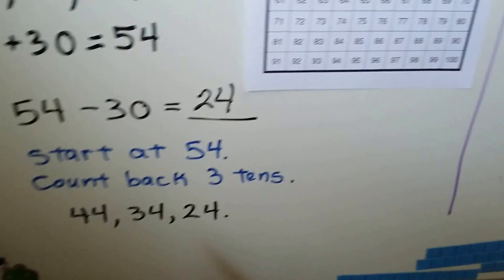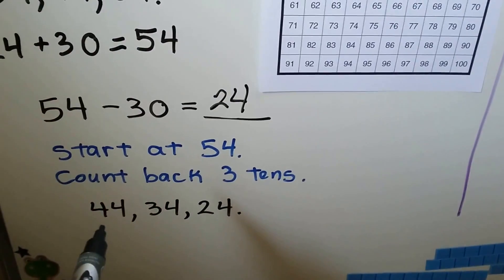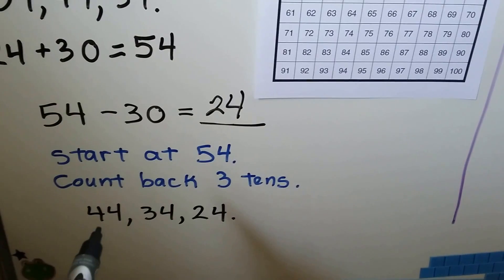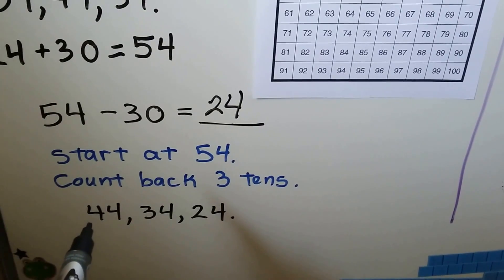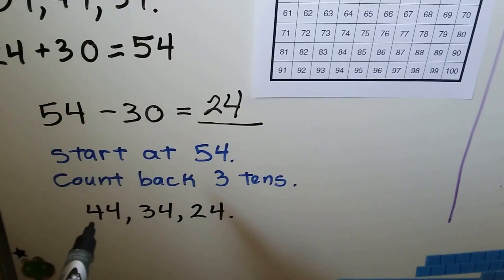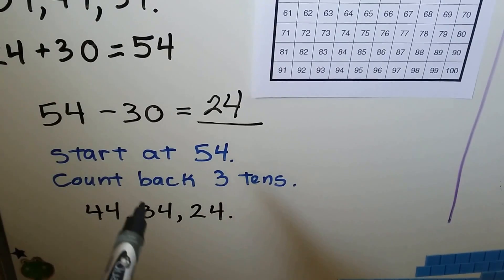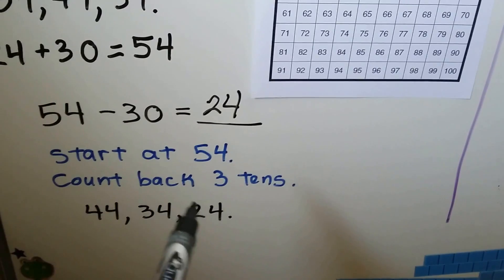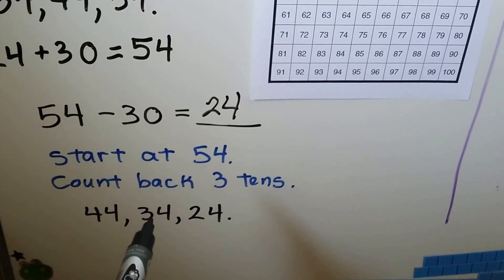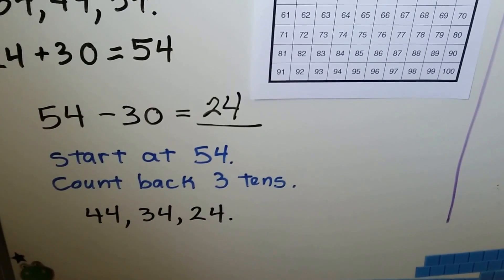So 54 minus 30 is equal to 24. We counted back: 44, 34, 24. Because we were counting back, the number in the tens place got smaller by 1 each time — 4 tens, 3 tens, 2 tens.